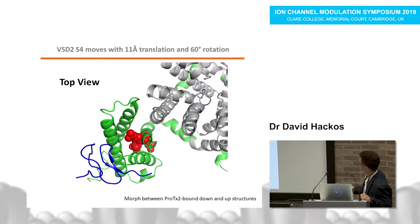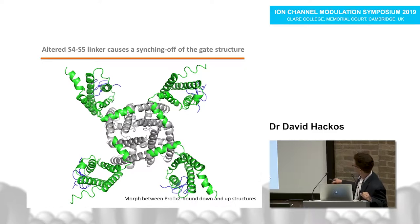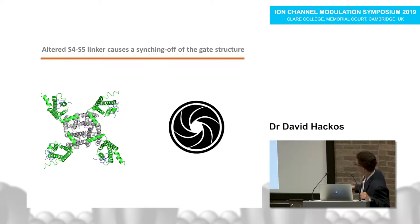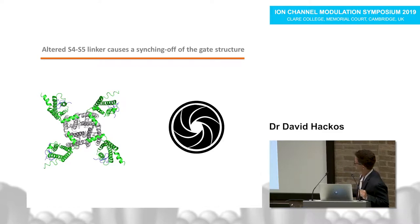From the bottom view, you can see the voltage sensor pushing on the S4-S5 linker alpha helix, which in turn pushes on the lower part of the S5 helix in the channel, causing a cinching of the gate structure from the intracellular side of the channel — somewhat reminiscent of a camera lens. We believe this is the mechanism by which the gate opens and closes. This idea has been proposed before, but this is the first structural data suggesting it as a possibility for the gating mechanism of a voltage-gated ion channel.